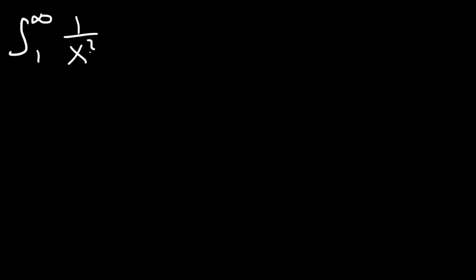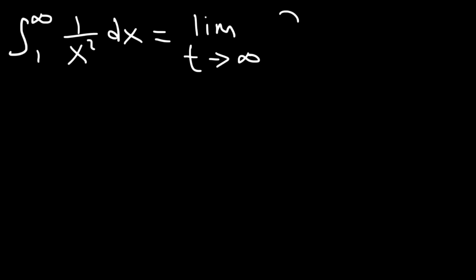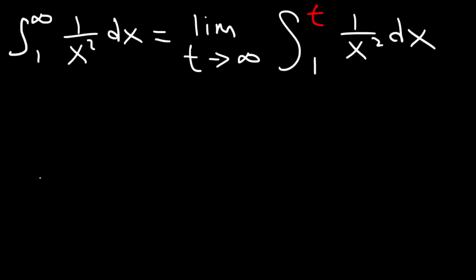Now let's try another example. Let's integrate 1 over x squared from 1 to infinity. Feel free to pause the video if you want to work this out. We begin by converting this into a limit expression: the limit as t goes to infinity of the integral from 1 to t of 1 over x squared dx.